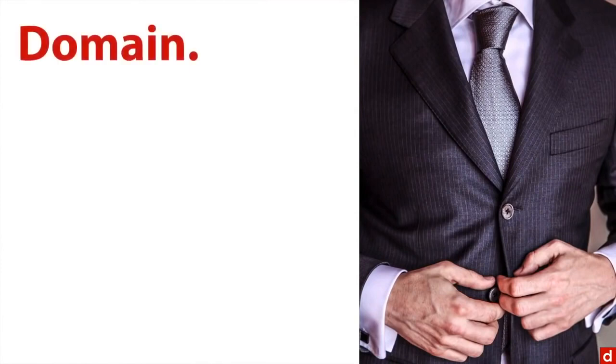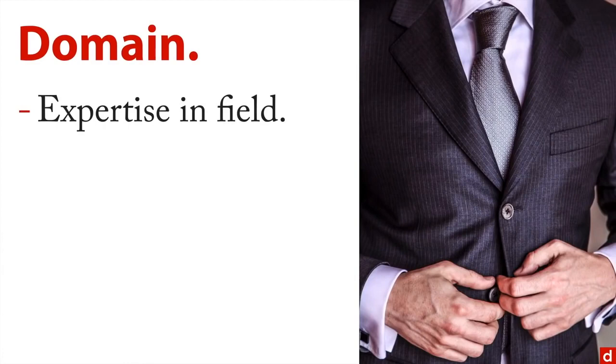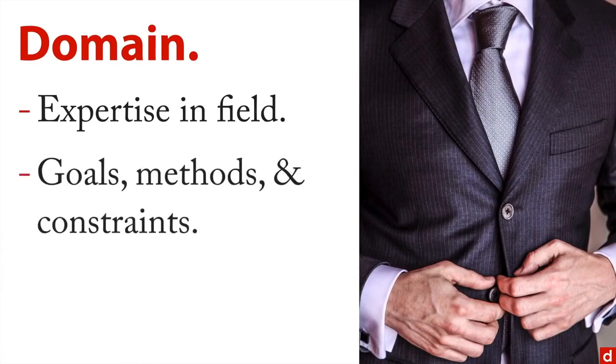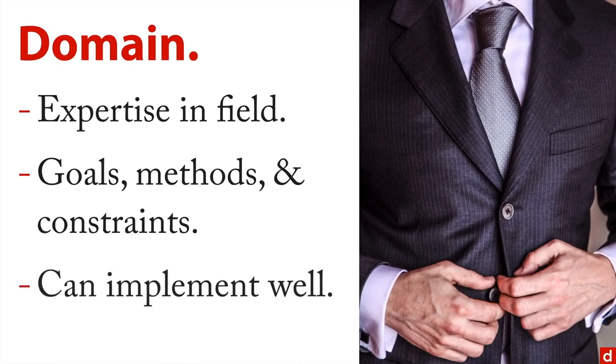And the third element of the data science Venn diagram is some sort of domain expertise—expertise in the field that you're in. Business settings are common; you need to know about the goals of that field, the methods that are used, the constraints that people come across. And it's important because whatever your results are, you need to be able to implement them. Data science is very practical and designed to accomplish something. Your familiarity with a particular field of practice is going to make it much easier and more impactful when you implement the results.